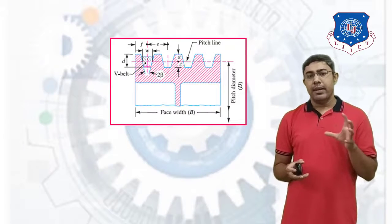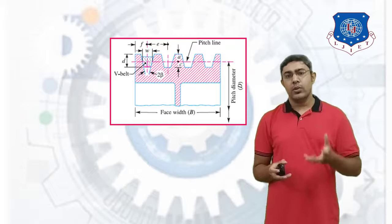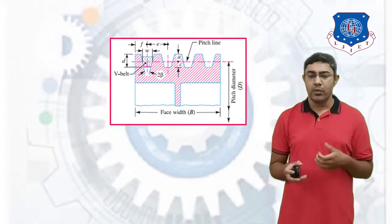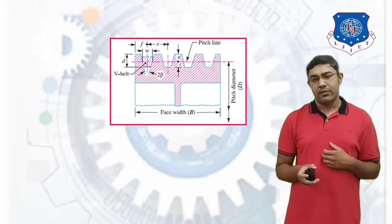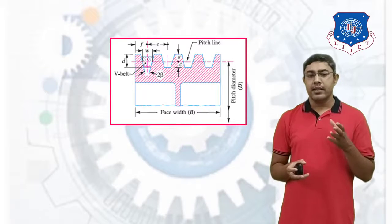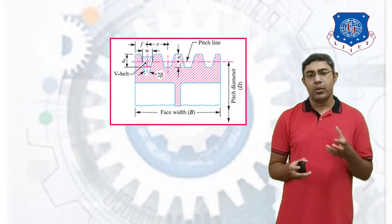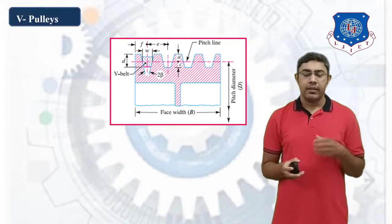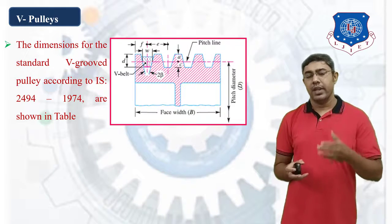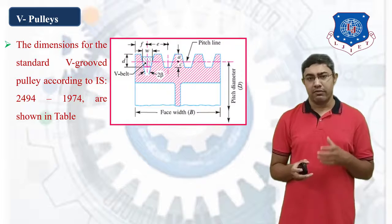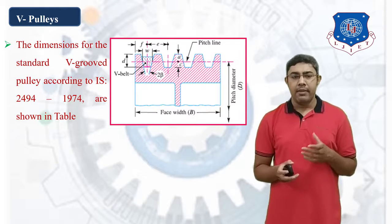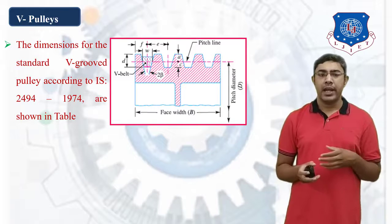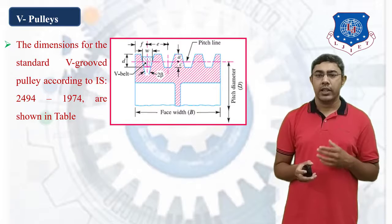According to V-Belt drives, we also need pulley dimensions. The figure shows the cross-sections of V-Belt pulley. The dimensions of the pulley are selected according to the type of belt chosen. Dimensions for the standard V-Belt pulley according to IS 2494-1974 are shown in tables.